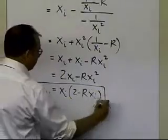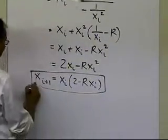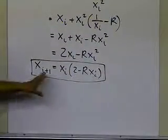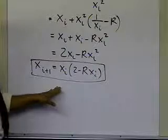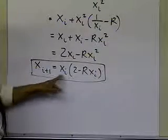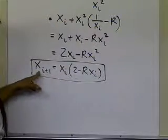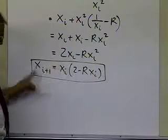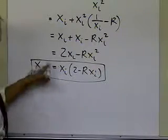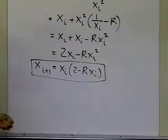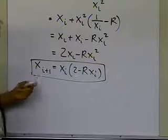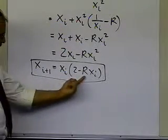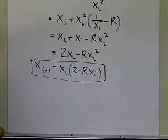So I think I have done it by using this recursive formula. There is no division involved in this recursive formula. I can choose the initial guess, find out a new guess, put that back in, and whatever the final guess is — whatever I stop the iterations at — will give me an estimate of the inverse of r.